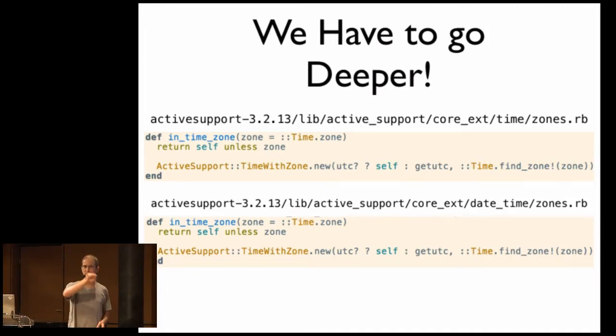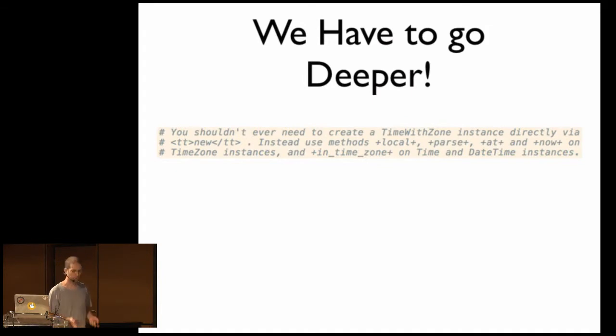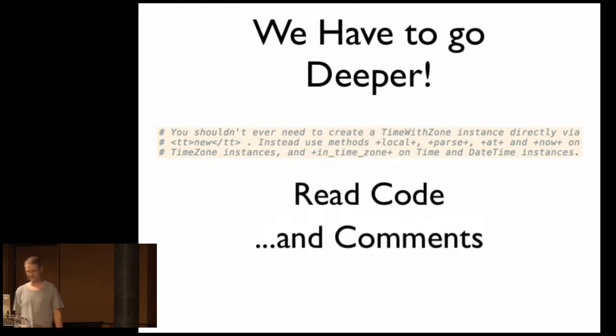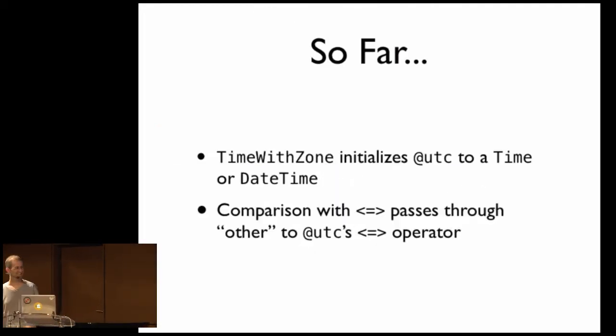So now we have that constructor, which is setting this UTC instance variable. And we're finding out that depending on which of these two methods we call that UTC object is going to either be a time or a date time. Of course, we probably could have gotten here a little bit quicker than hunting through the code if we had simply read the comment that exists a short way above the definition of the time with zone class that says you should never need to create a time with zone instance directly. Call one of those two methods that we just looked at. So, read code and the comments.